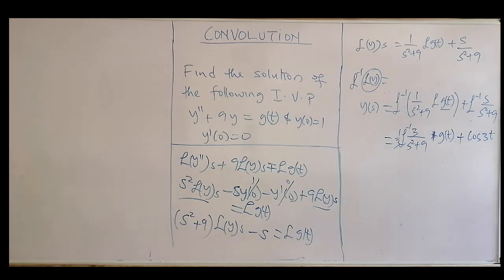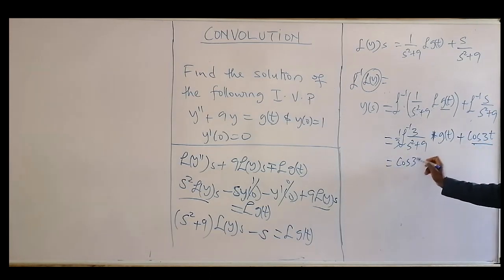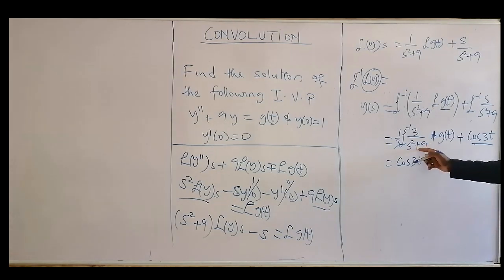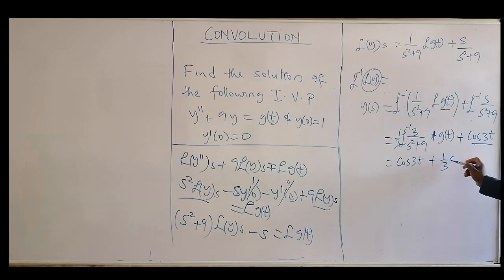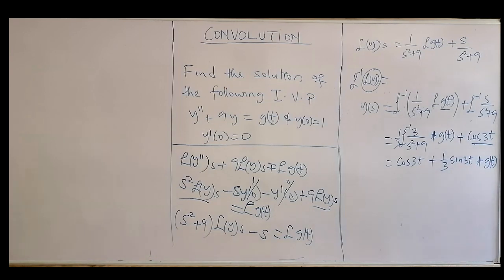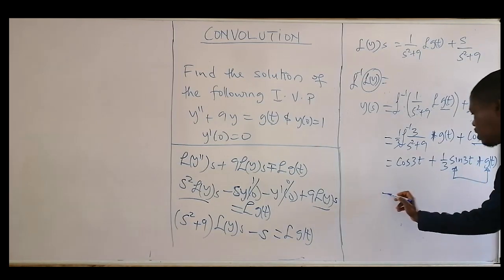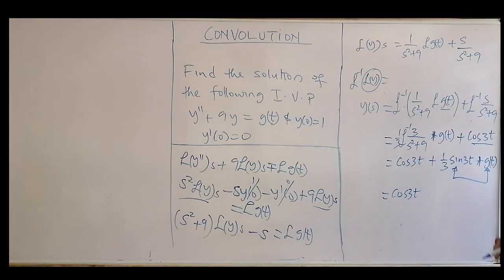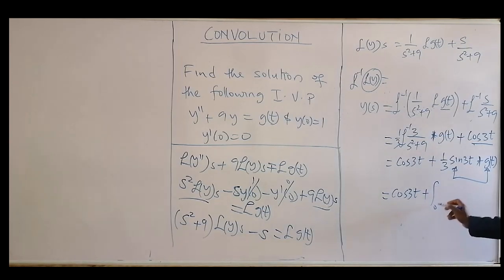Writing this out, we have y(t) = cos(3t) plus (1/3)sin(3t) * g(t), where * denotes convolution. Using the convolution formula, this becomes cos(3t) plus an integral from 0 to t.